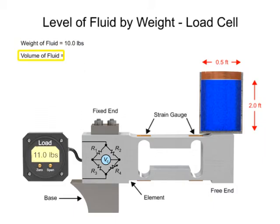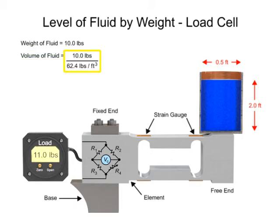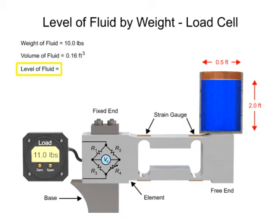The volume of the fluid is then derived by dividing the fluid weight by the density of the fluid. The level of the fluid is finally calculated by dividing the volume of the fluid by the surface area.